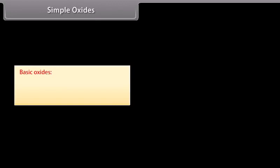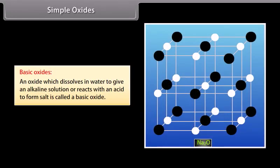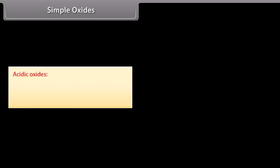Basic oxides: An oxide which dissolves in water to give an alkaline solution or reacts with an acid to form salt is called a basic oxide. For example, Na2O, K2O, MgO and CaO.